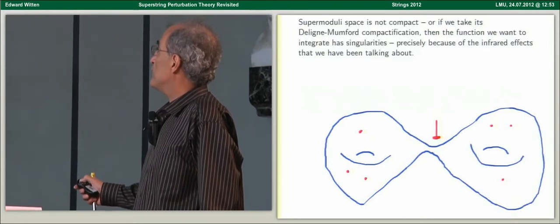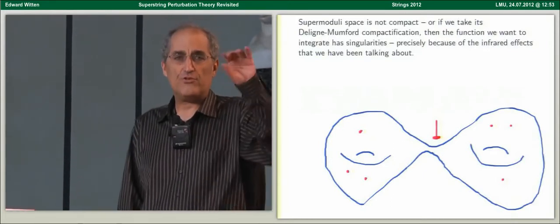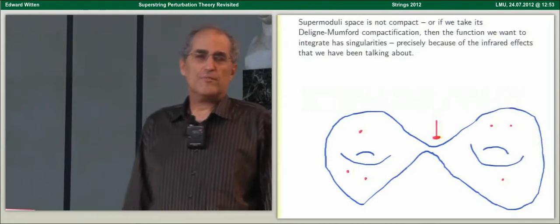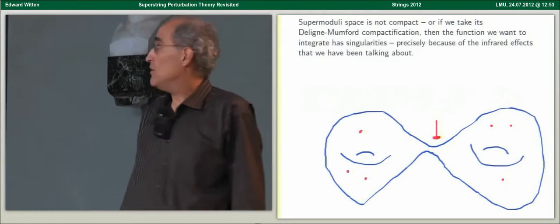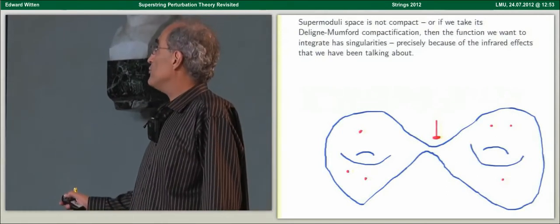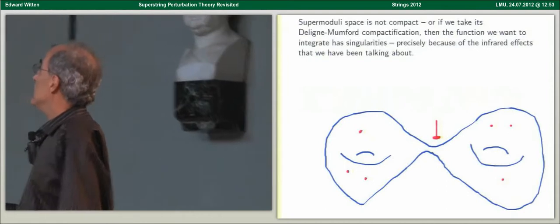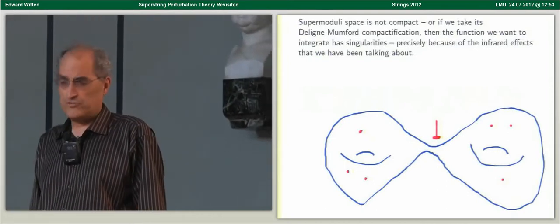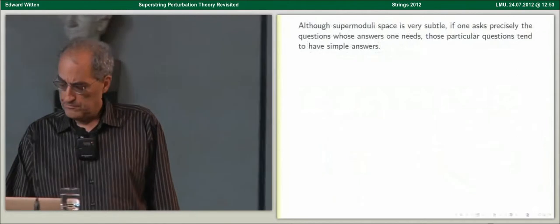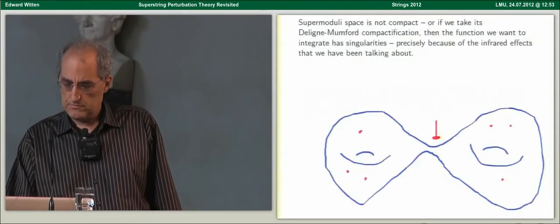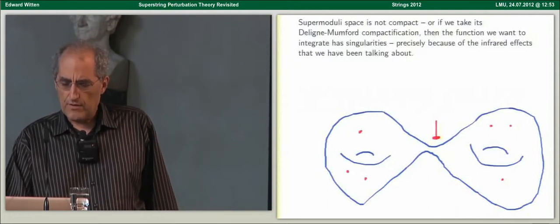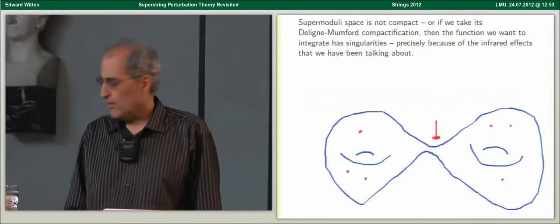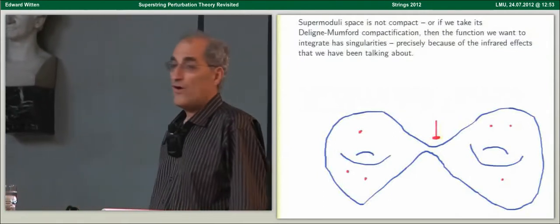In the limit where this neck becomes very long or collapses, you can either say that moduli space is not compact there or that the measure has a singularity there. Either way, we're not integrating a smooth measure on a compact supermanifold. So we need a little bit more, but it's basic for orientation that on a compact space there'd be no problem with integration, so the only delicacies involve the infrared behavior.